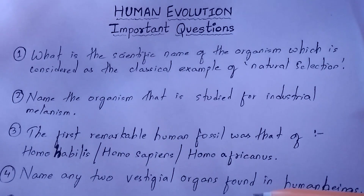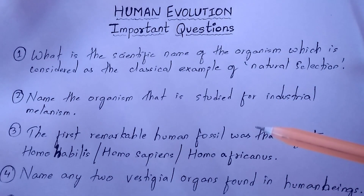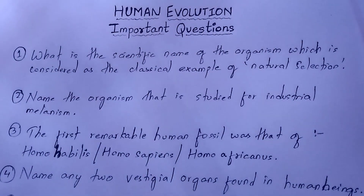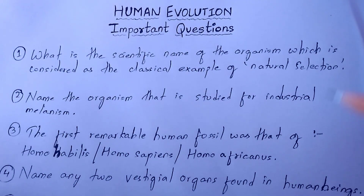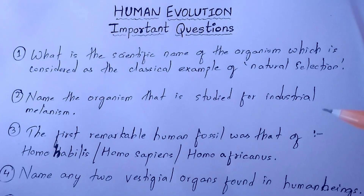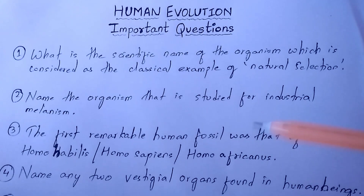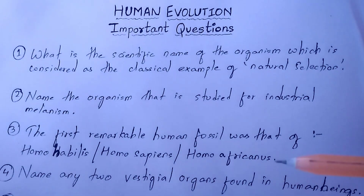All these questions are very important for your ICSE 2020 board examination. This chapter — human evolution — was included last year only, so you will not find many questions in your 10 years of past papers. You can refer to all these questions for your board examinations as revision. If you want the PDF, you can download it from the description box.